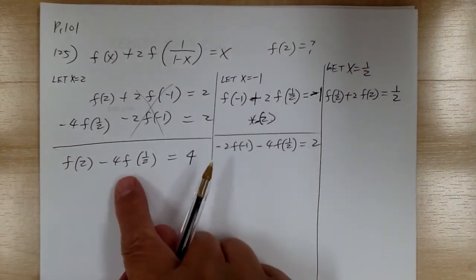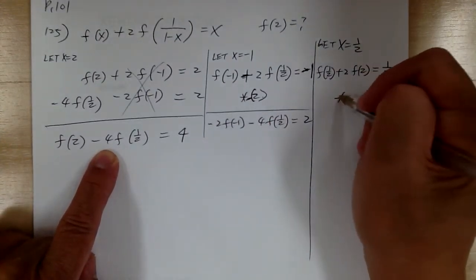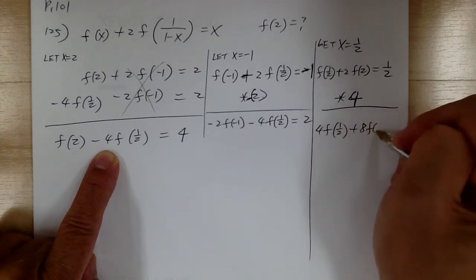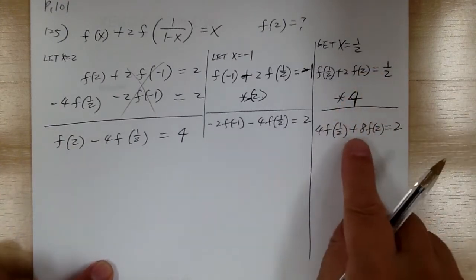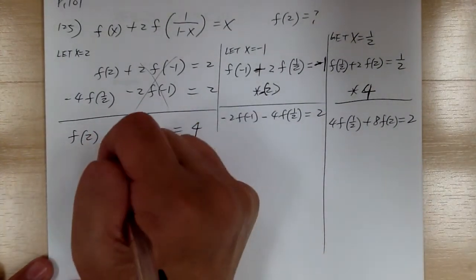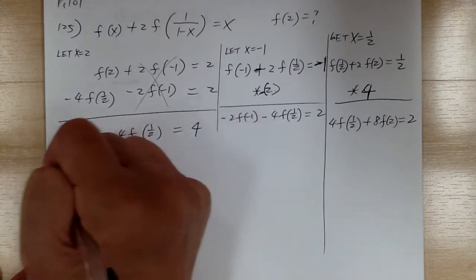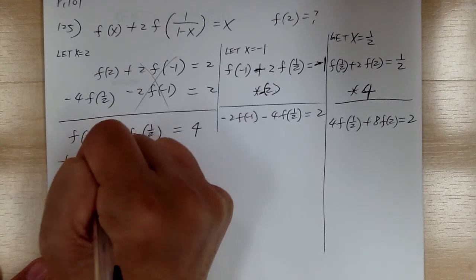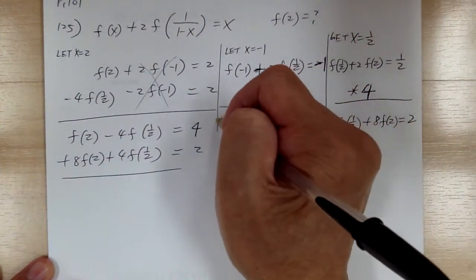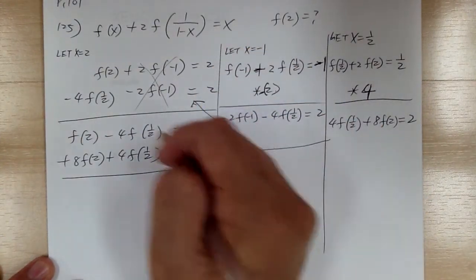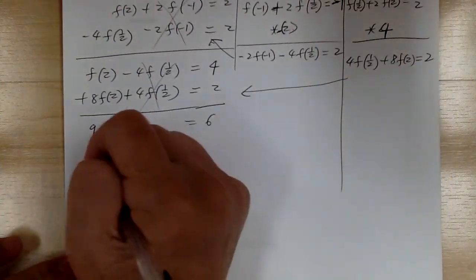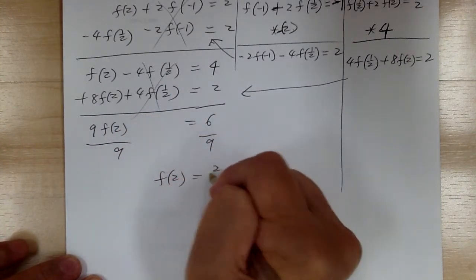Now use the third equation to eliminate f of one half. Multiply the third equation by 4: 4 f of one half plus 8 f of 2 equal to 2. Adding to the previous result — f of one half cancels — you get 9 f of 2 equal to 6. Dividing by 9: f of 2 equals 2 over 3.